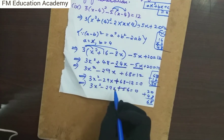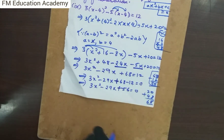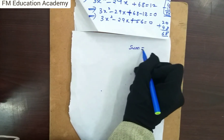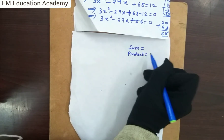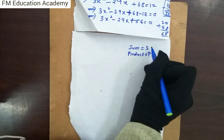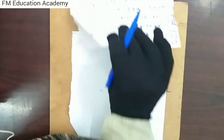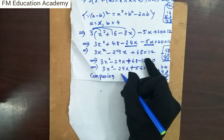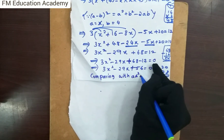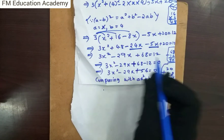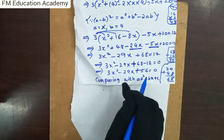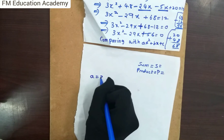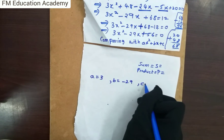The equation is now in the standard form ax² + bx + c, so I can split the middle term. Comparing 3x² − 29x + 56 = 0 with ax² + bx + c: a = 3, b = −29, and c = 56.